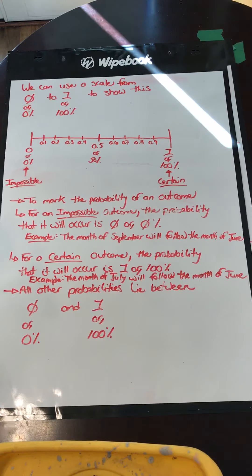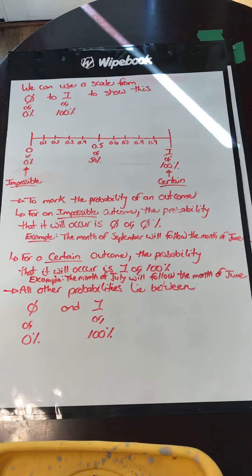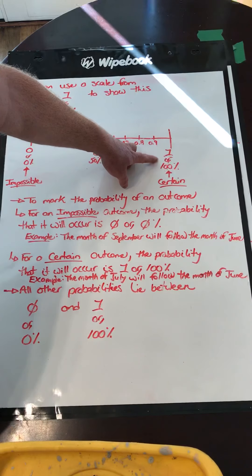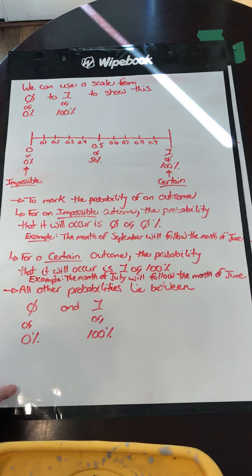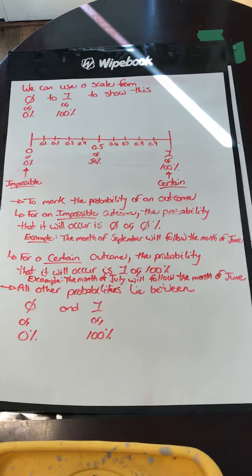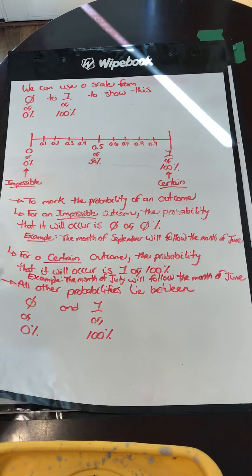For a certain outcome, the probability that it will occur is 1 or 100%. For example, the month of July will follow the month of June — that has a favorable outcome that equals the number of possible outcomes, so that event is 1 or 100%, and we identify that event as certain. All other probabilities lie between 0 and 1, or 0% and 100%.